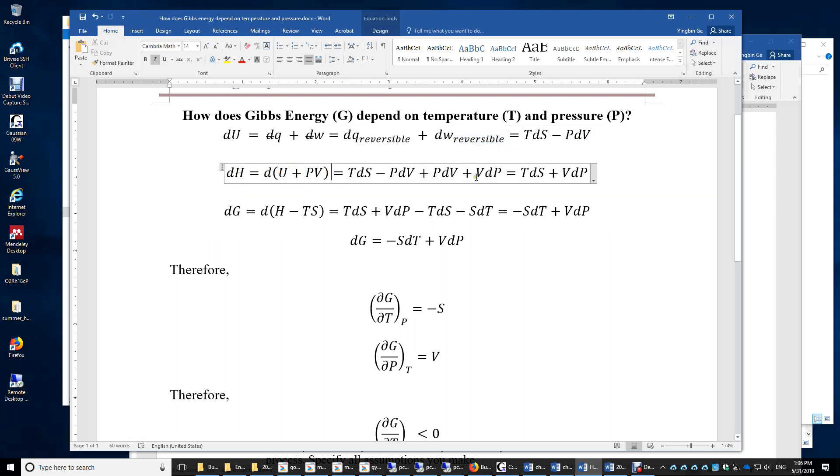Therefore, dH is equal to TdS plus VdP using calculus. G, the Gibbs free energy, is defined to be H minus TS. Again, using some calculus, we have dG equals negative S dT plus VdP.